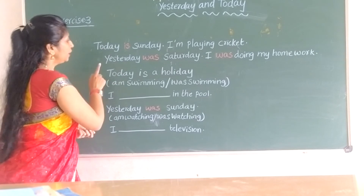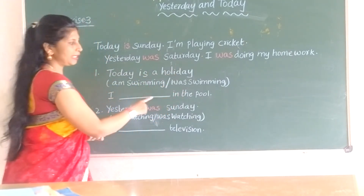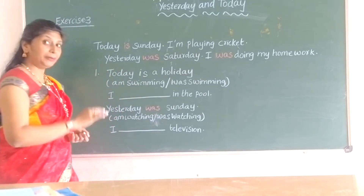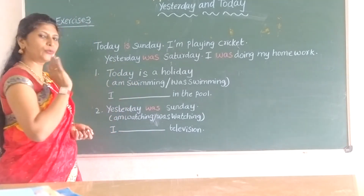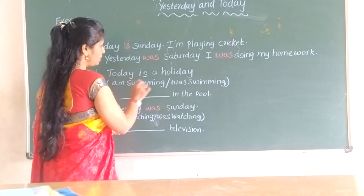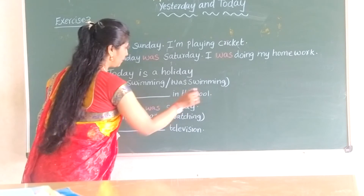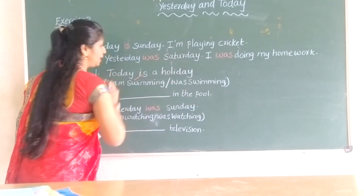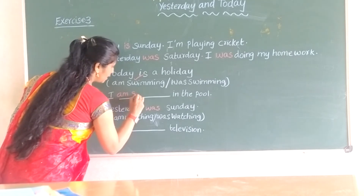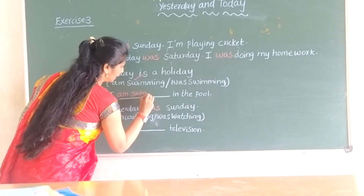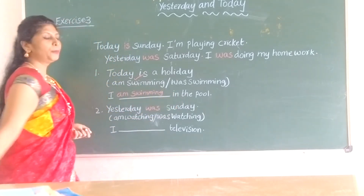Yesterday means 'was'. Today is the morning, I dash in the pool. Today means 'is', yesterday means 'was'. I am swimming in the pool. W-I-M-M-I-N-G. I am swimming in the pool. Okay.